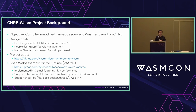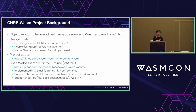That's our motivation to build this project: CHRE on WebAssembly. Our design goal is to compile modified NanoApp source code to WebAssembly and run it on CHRE. You shouldn't need to change anything in your source code to compile to WebAssembly, you need to maintain the existing NanoApp lifecycle, and you should have interoperability between native NanoApps and WebAssembly-based NanoApps. We've provided a GitHub link for this project — go take a look and you're welcome to contribute.